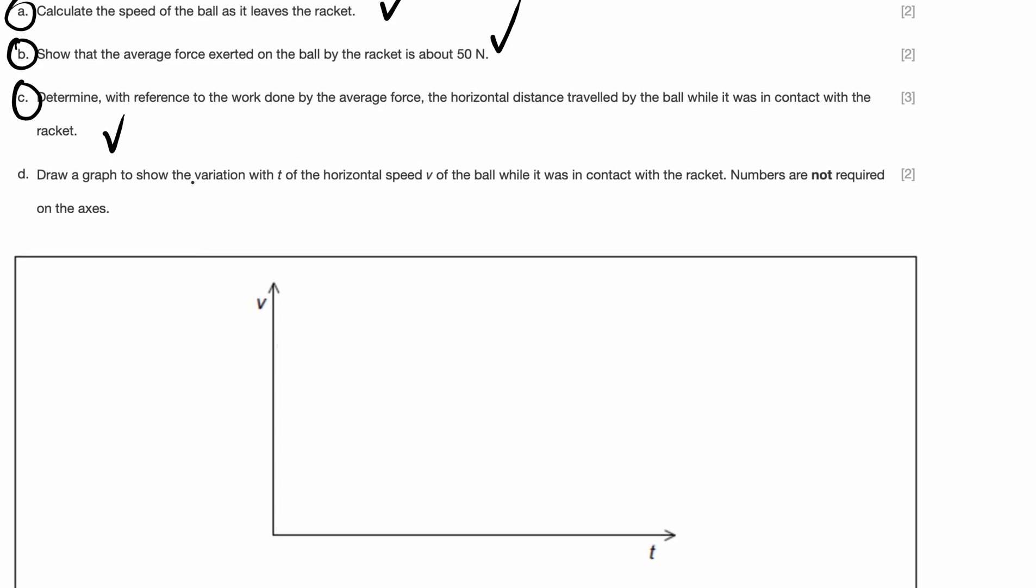Finally, part D. They're asking us to draw a graph to show the variation with T of the horizontal speed V of the ball while it was in contact with the racket. We know that the racket is going to hit the ball, and as it leaves the racket, there's going to be an increase in acceleration. So the ball will start something like this, and there's going to be a sharp increase in acceleration. But we also know that eventually it will go into projectile motion. And what does projectile motion tell us? The horizontal velocity is constant. So after a point in time, the horizontal velocity just becomes constant like that. The graph would look something like this. It's been hit. Over time, it gains an acceleration shown by this gradient, and eventually it becomes constant. That is what the graph is, and we've answered part D as well.